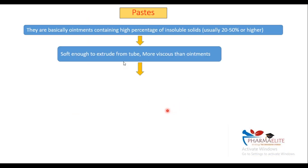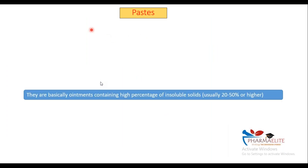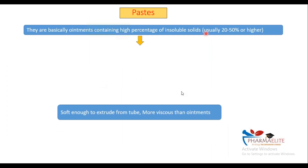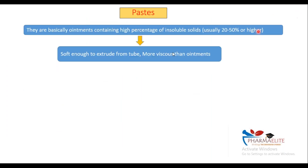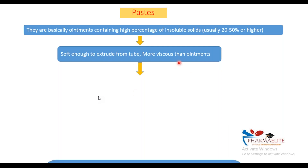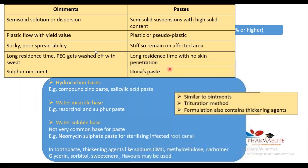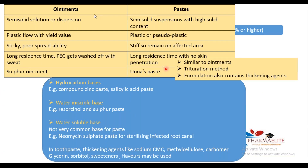Talking about paste — this is where we are supposed to start today. Paste basically has a higher percentage of insoluble solids; solid content is more. They are more viscous than ointments. Viscosity is higher. They have different types of bases, so we'll talk about those bases and also talk about the difference between ointment and paste.